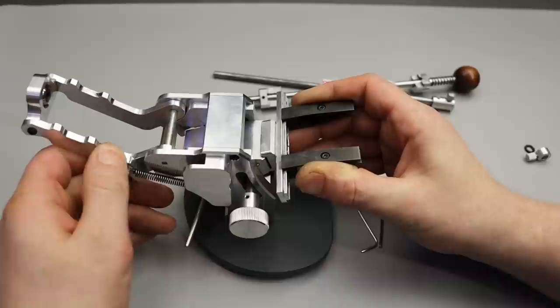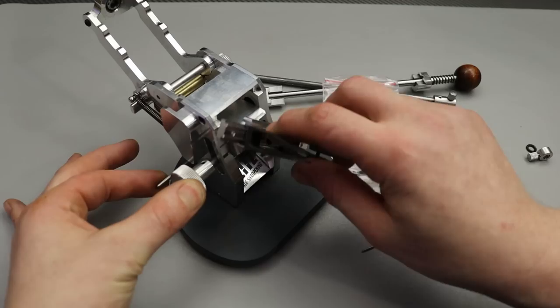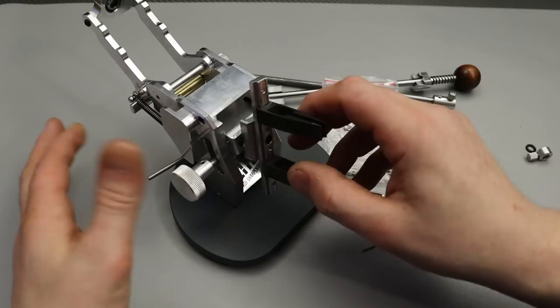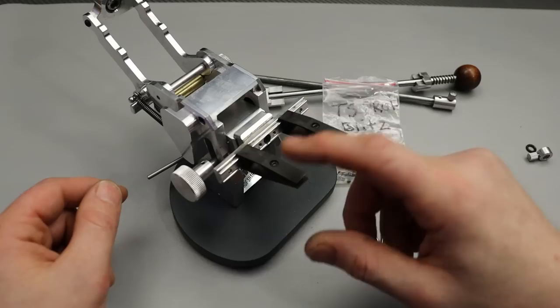Now in order to spin the clamp, you pull this right here, pull it out, and then it spins and it'll lock in place. Very simple to use. You do have to have the screws face up to release the clamp because these two screws are what is going to clamp in the knife.